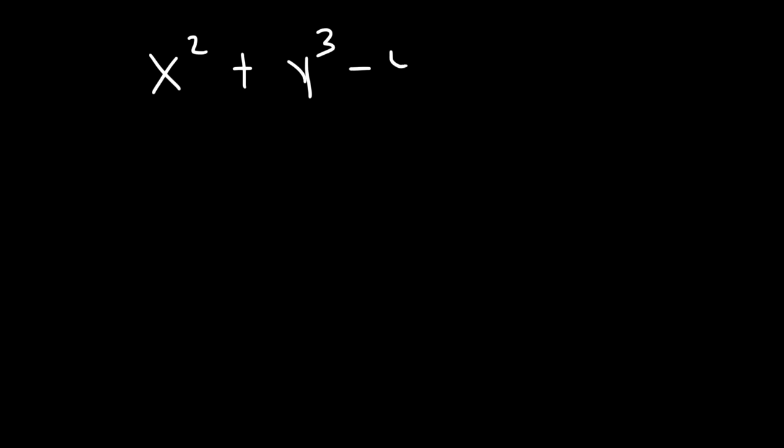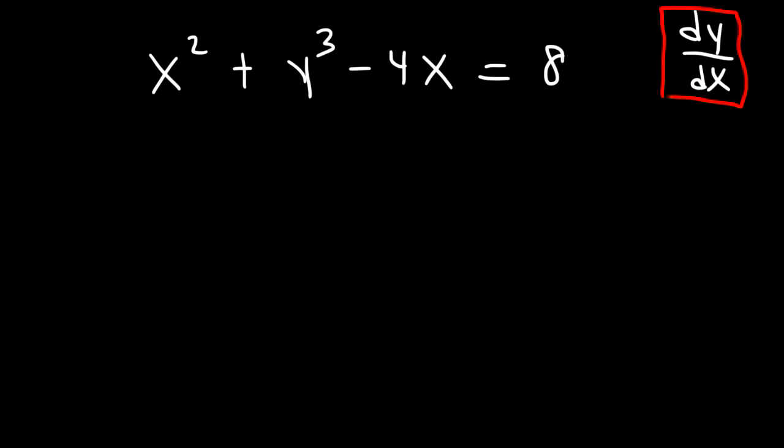In this video, we're going to talk about how to do implicit differentiation. So let's say if you're given a problem that looks like this: x squared plus y cubed minus 4x is equal to 8. And then you're told to find dy over dx. So what do you need to do in order to find dy over dx in this problem?